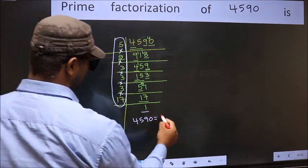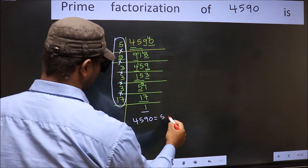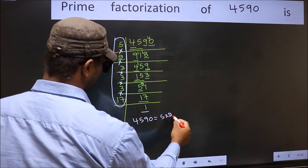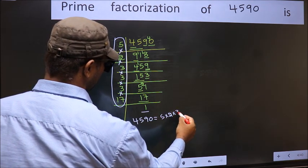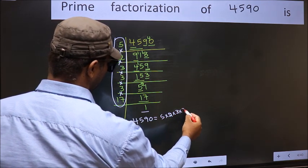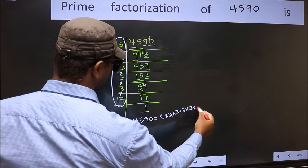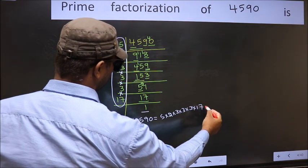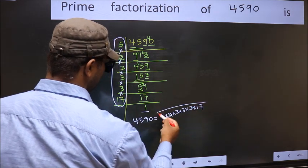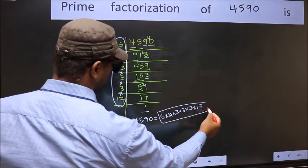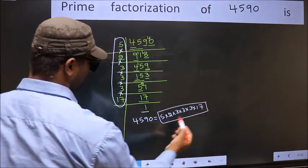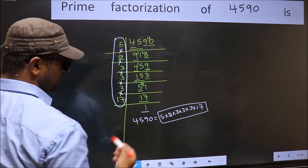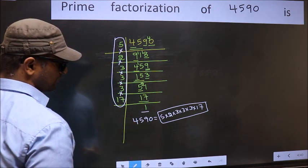That is 5 into 2 into 3 into 3 into 3 into 3 into 17. This is the prime factorization of 4590.